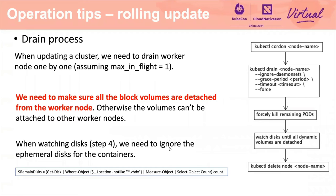The next operation is also for the rolling update. When updating the cluster, we need to drain the Windows worker node one by one — we assume maxInFlight is one here for simplicity. The rough workflow is described in the diagram on the right side. The first step is to cordon the worker node, so as to mark the node as unschedulable — any new pod will not be scheduled on this worker node anymore. Secondly, drain the worker node so as to evict all the existing pods running on this Windows worker node. Please note that we need to ignore the DaemonSet, because DaemonSet pods cannot be drained.